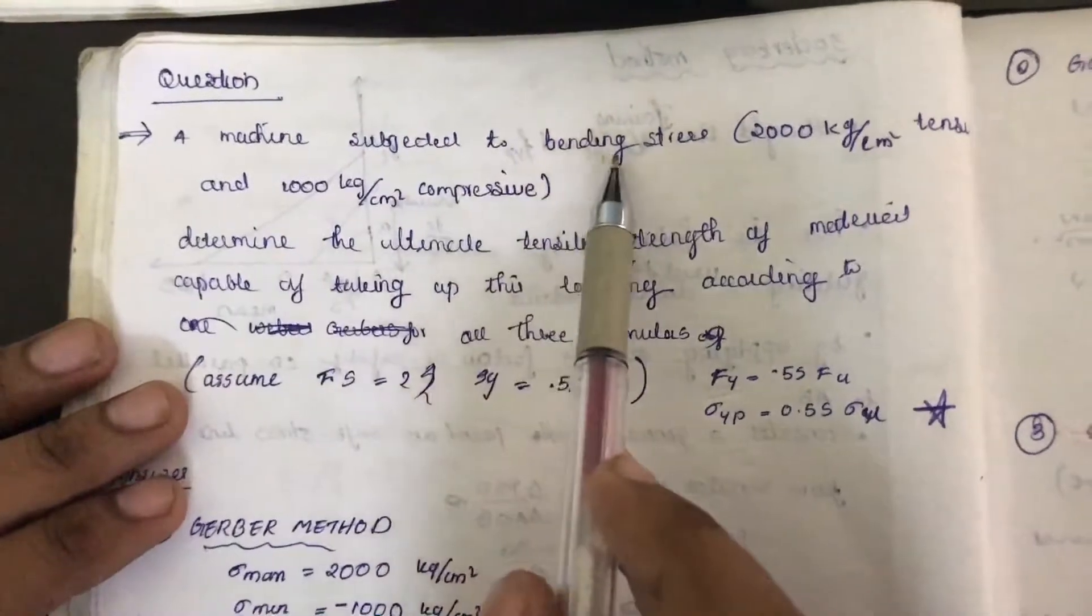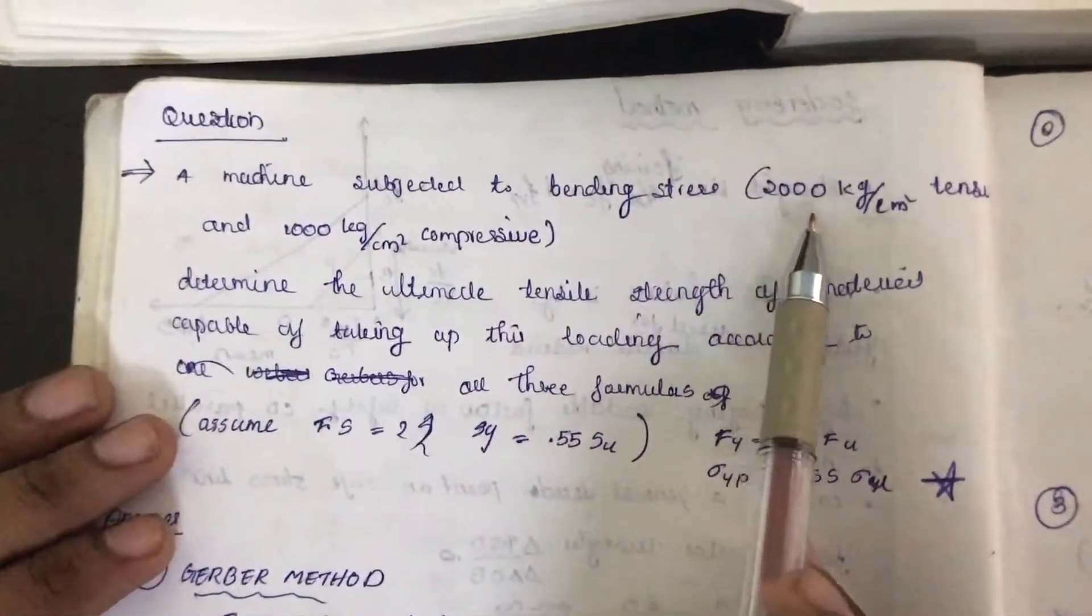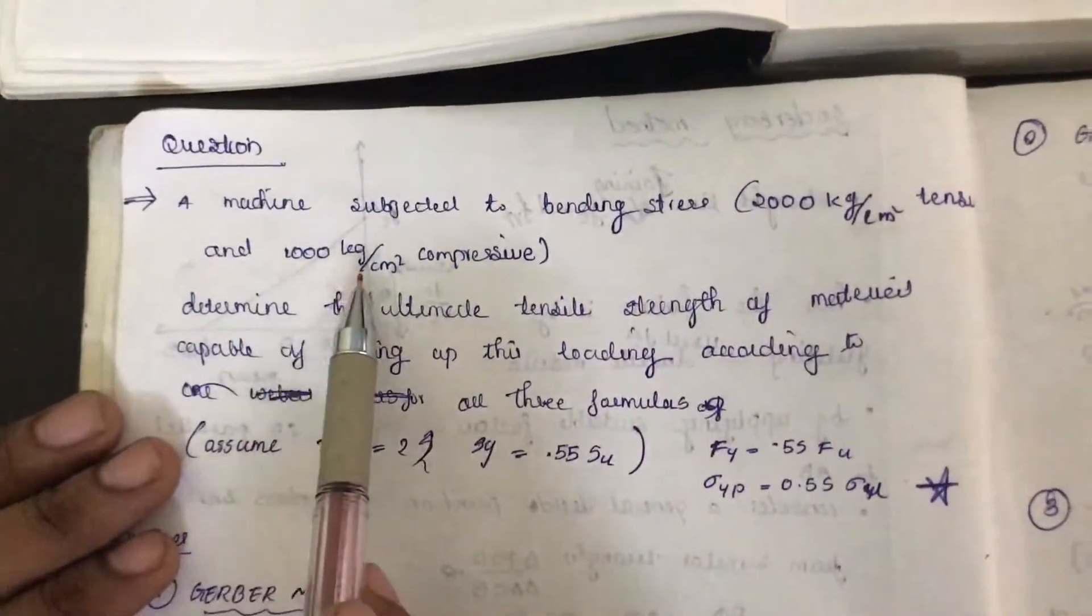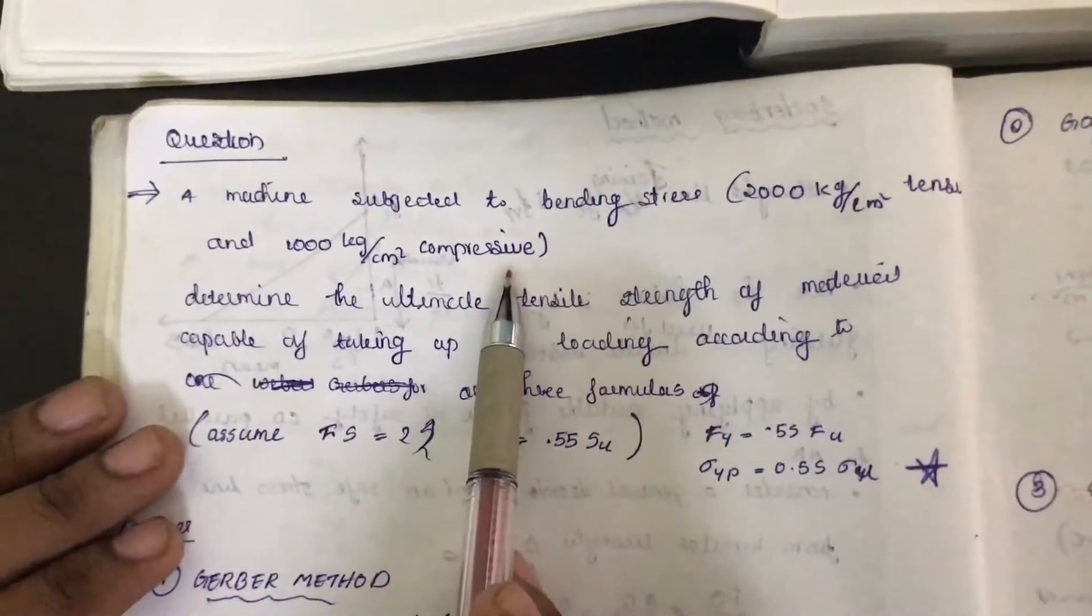A machine is subjected to bending stress of 2000 kilogram per centimeter square tension and 1000 kilogram per centimeter square compression.